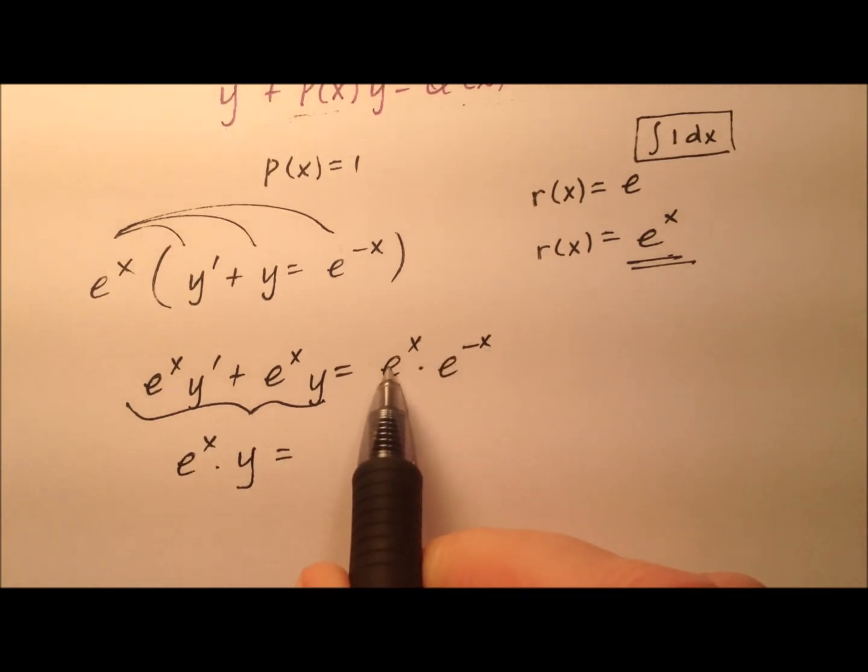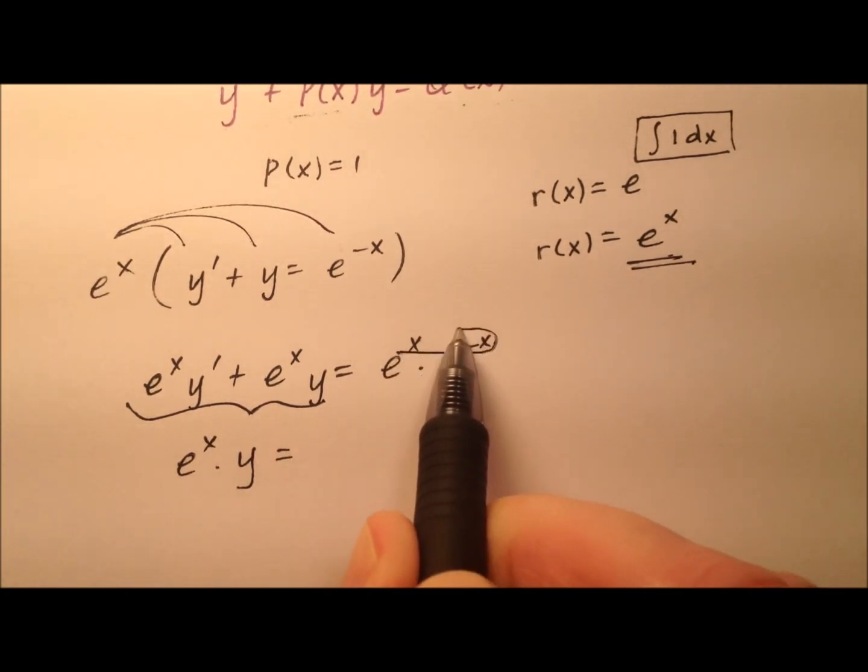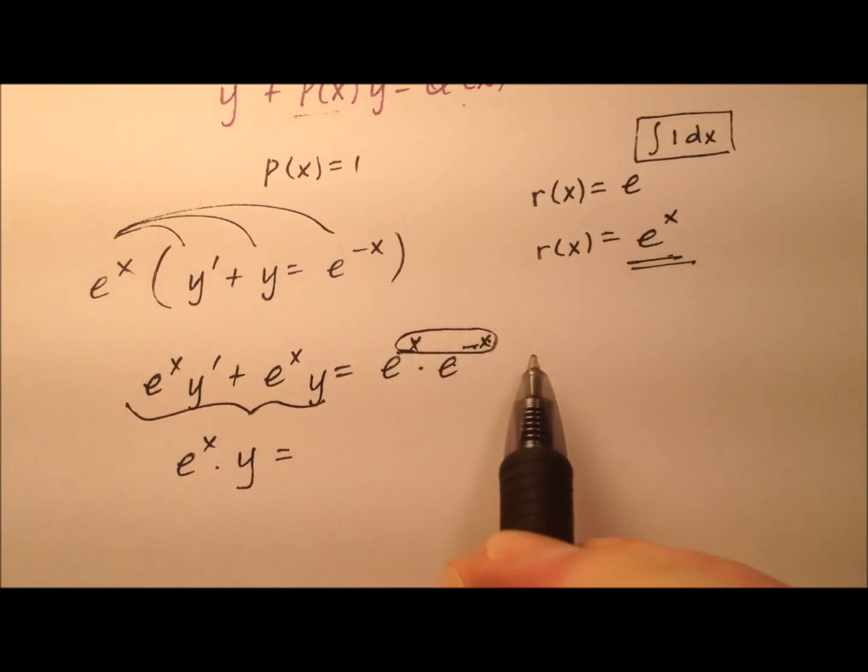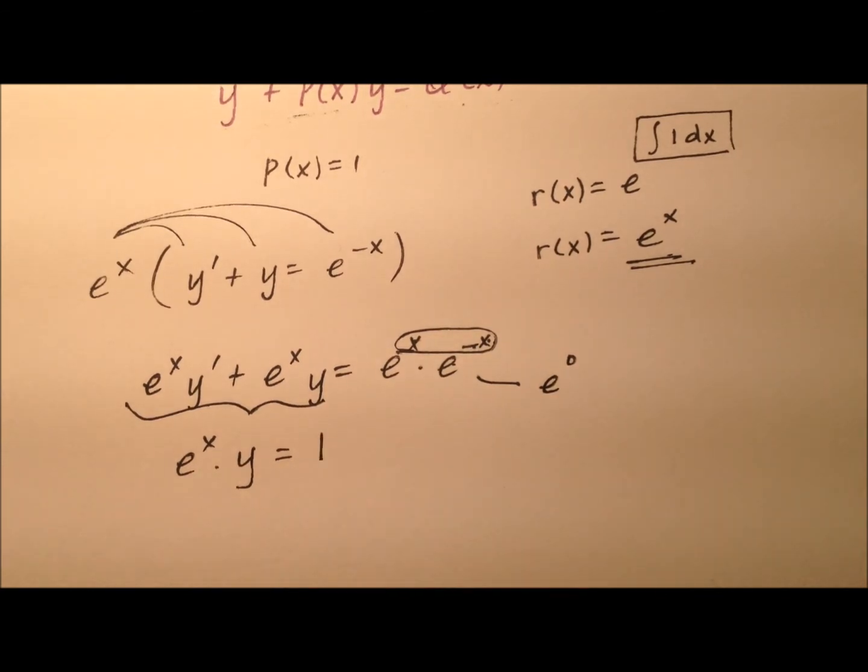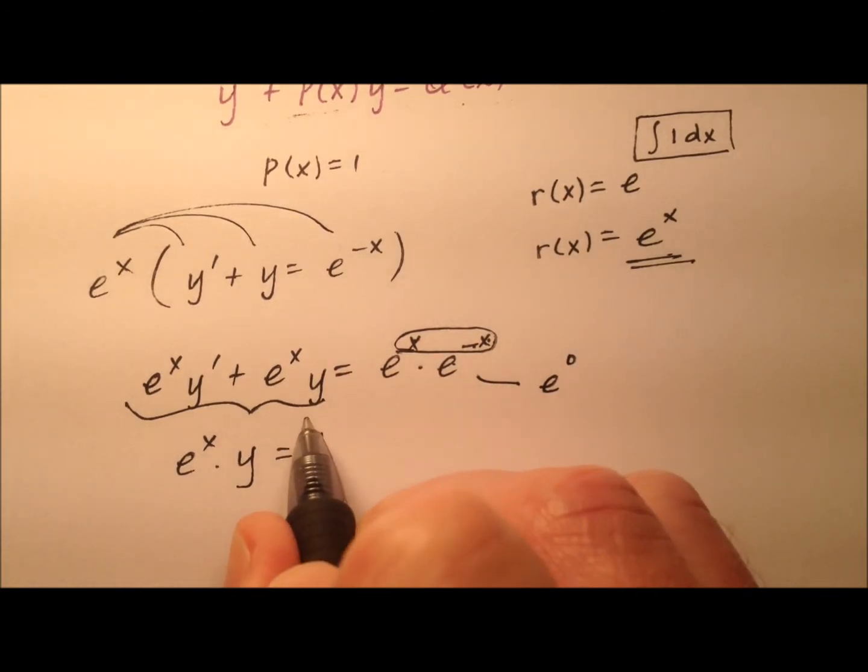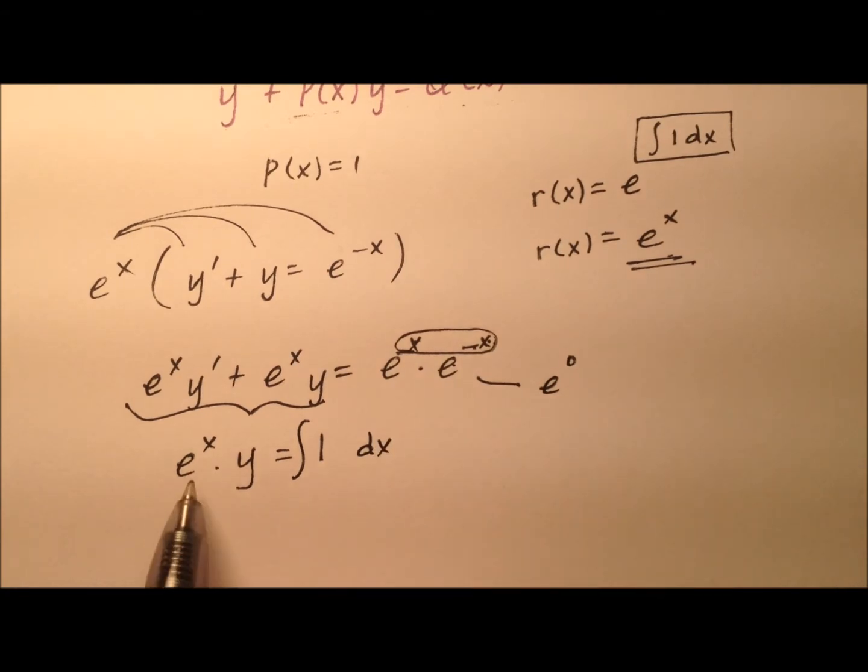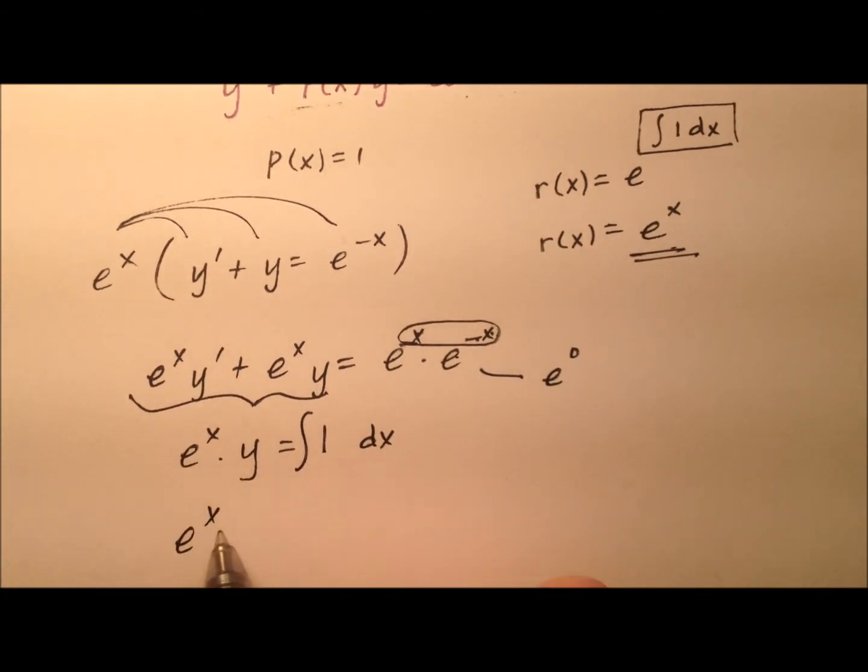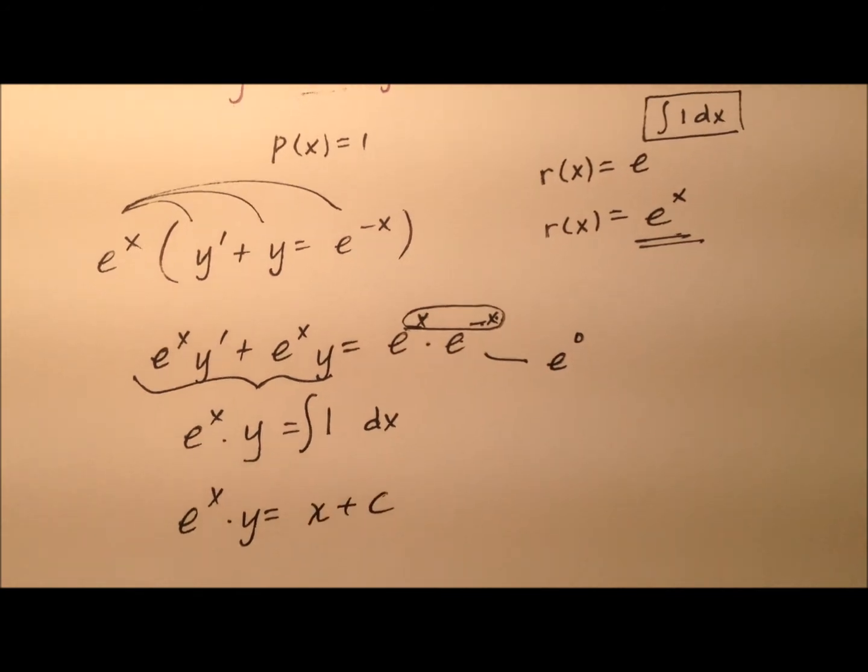When I'm multiplying like bases, I'll add the exponents. So x minus x is actually 0. So it's e^0, which makes 1. Well okay, I need to integrate that right side since I've already integrated the left side. So it looks like e^x times y will equal x + c.